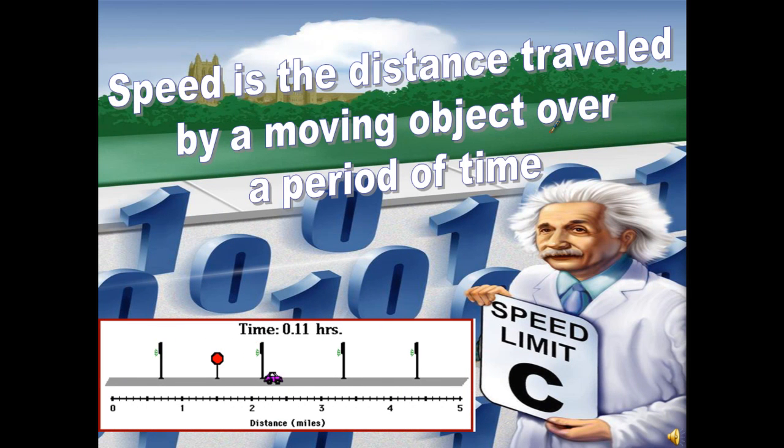So speed is the distance traveled by a moving object over a period of time. You can translate that into an equation. Speed equals distance over time. And there's your first kinematics equation. If you look at this car down here, he's traveling for 0.2 hours and he goes the distance of 5 miles. So 5 divided by 0.2 is going to give us 10 miles per hour.